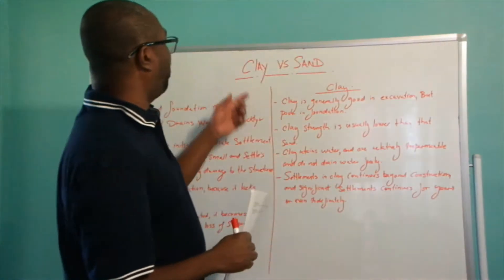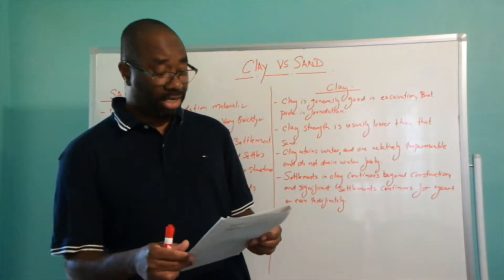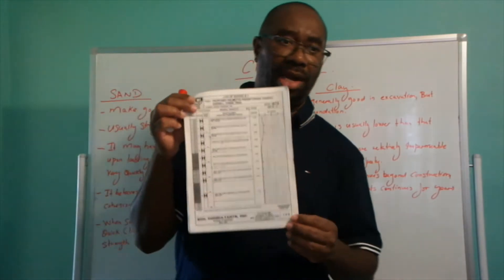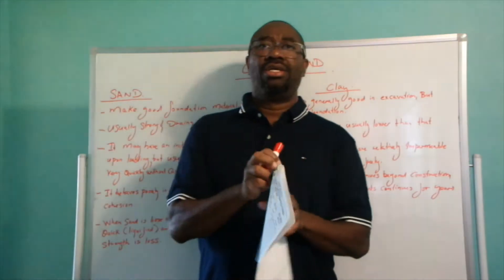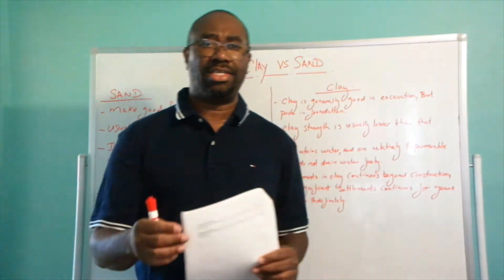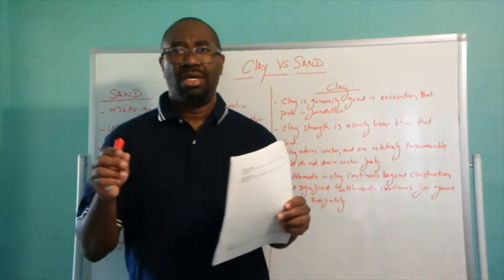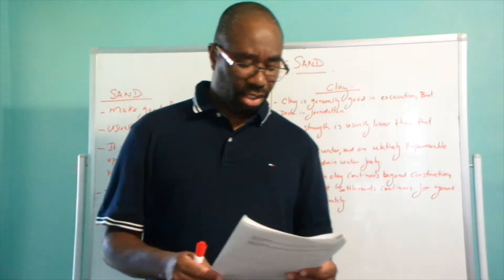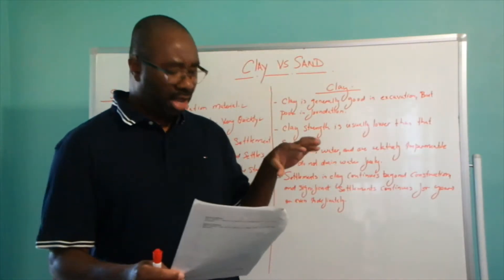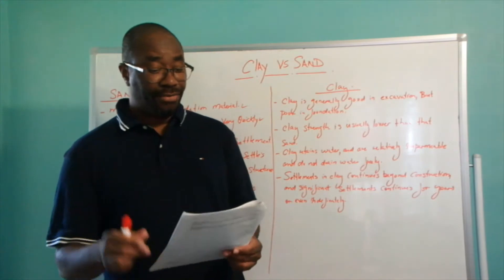Now I'm going to show you a small demonstration of what a boring log looks like. A boring log records the amounts of blow counts that it takes to pass through a particular soil layer. The soil samples are taken at every two feet, so I'm just going to read out to you the different soil types as the exploration goes down into the ground at different levels.